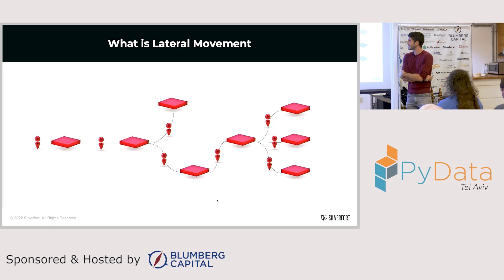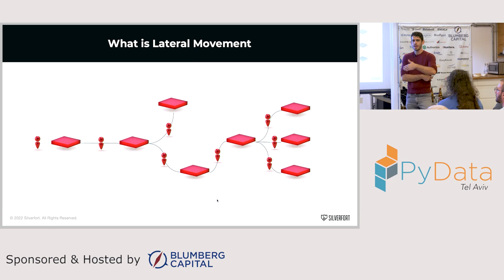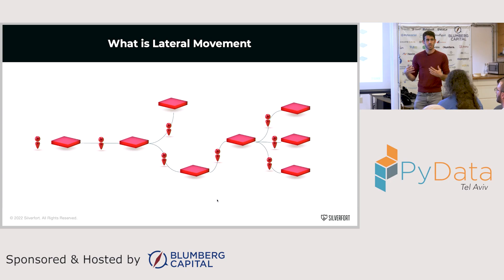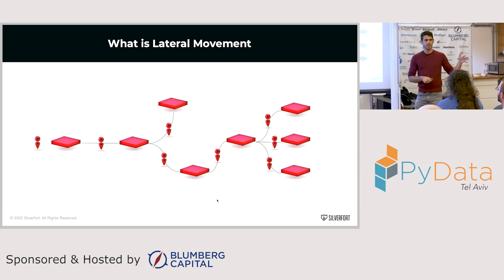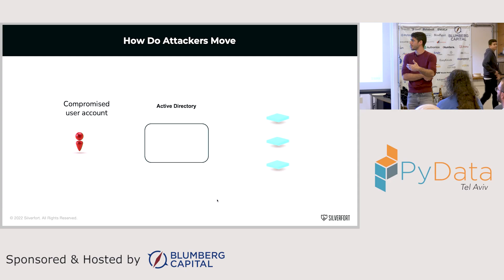So what is lateral movement? Lateral movement is where attackers somehow get into the organization - for example by sending a phishing email to gain initial access - and then they advance from computer to computer until they fulfill their objectives. Their objectives might be encrypting the entire organization's computers or leaking some information. The important thing to remember is that the attacker is advancing from computer to computer.